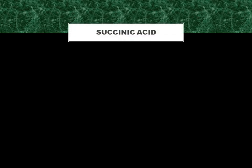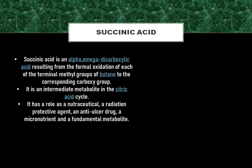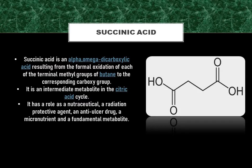In this experiment, we are dealing with SBT chloride and succinic acid. We have had a glimpse of SBT chloride, now we will see succinic acid. Succinic acid is an alpha-omega dicarboxylic acid resulting from the formal oxidation of each of the terminal methyl groups of butane to the corresponding carboxy group. It is an intermediate metabolite in the citric acid cycle. It has a role as a nutraceutical, a radiation protective agent, an anti-ulcer drug, a micronutrient, and a fundamental metabolite. Here is its structure.